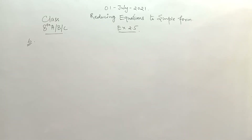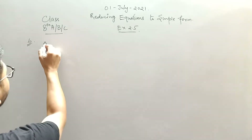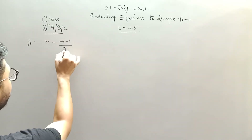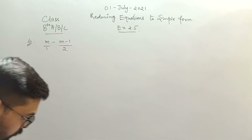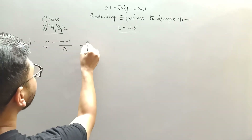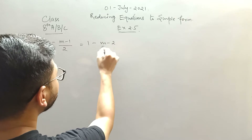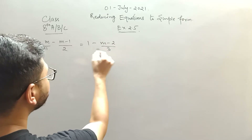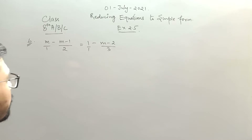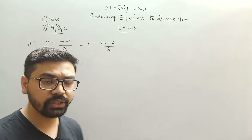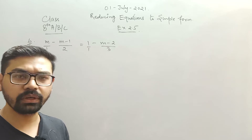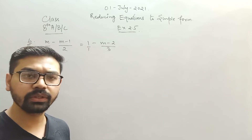Now the next question is question number 6, which is: m minus (m minus 1) divided by 2 equals 1 minus (m minus 2) divided by 3. The questions I am leaving intentionally are all for your homework, so just try those questions. If you find any difficulty while solving them, you can ask me.